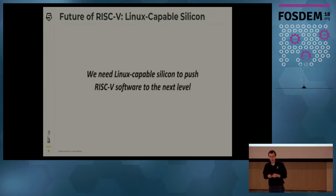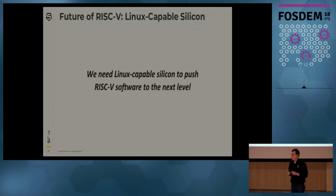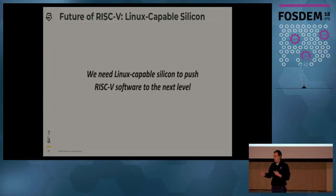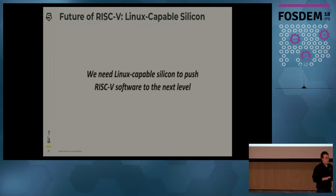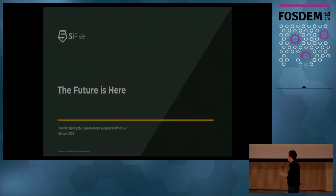A year ago, SiFive released the HiFive1 board with the Freedom E310 chip — an embedded microcontroller that was very popular, shipped to 50 countries, with lots of uptake from embedded developers. Now, in order to grow the RISC-V Linux-capable ecosystem, what we really need is a Linux-capable RISC-V board.